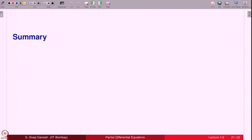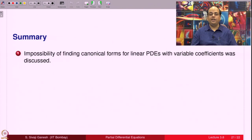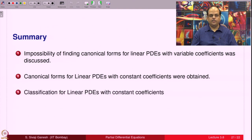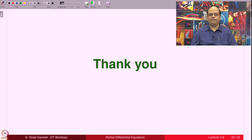Let us summarize what we did in this lecture. We discussed the near impossibility of finding canonical forms for linear PDEs with variable coefficients. Canonical forms for linear PDEs with constant coefficients were obtained. Classification for linear PDEs with constant coefficients was understood more clearly. Thank you.